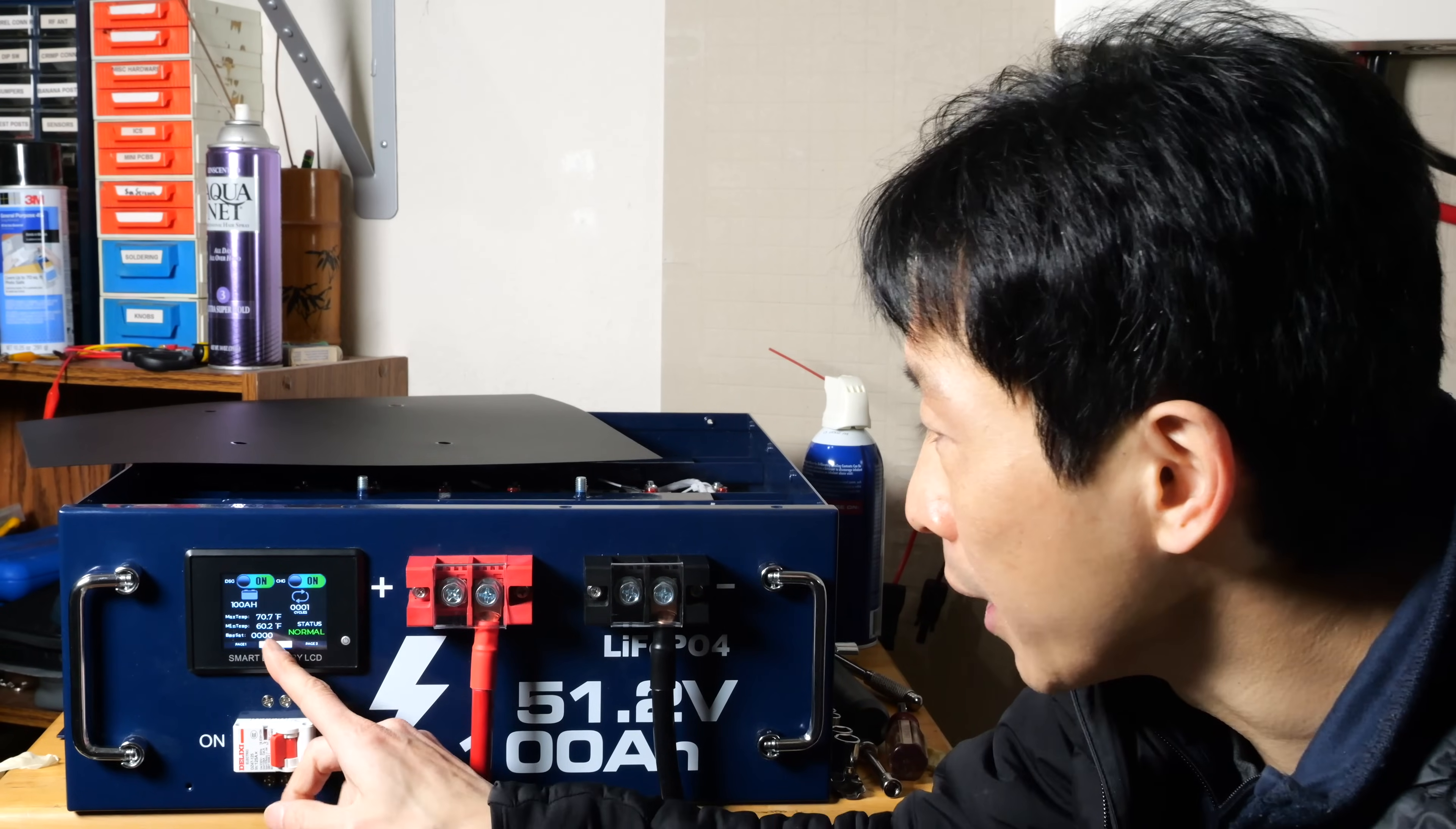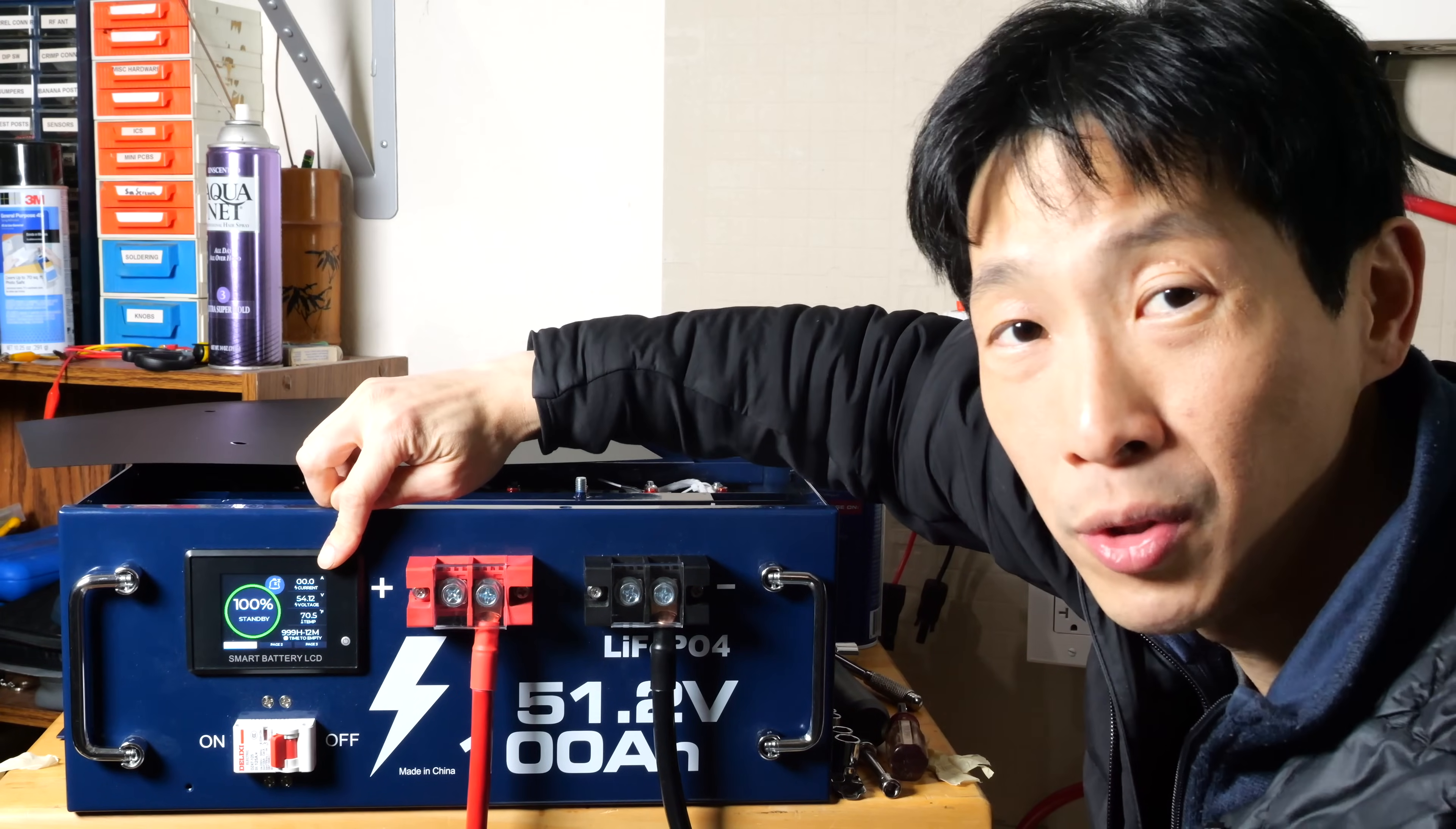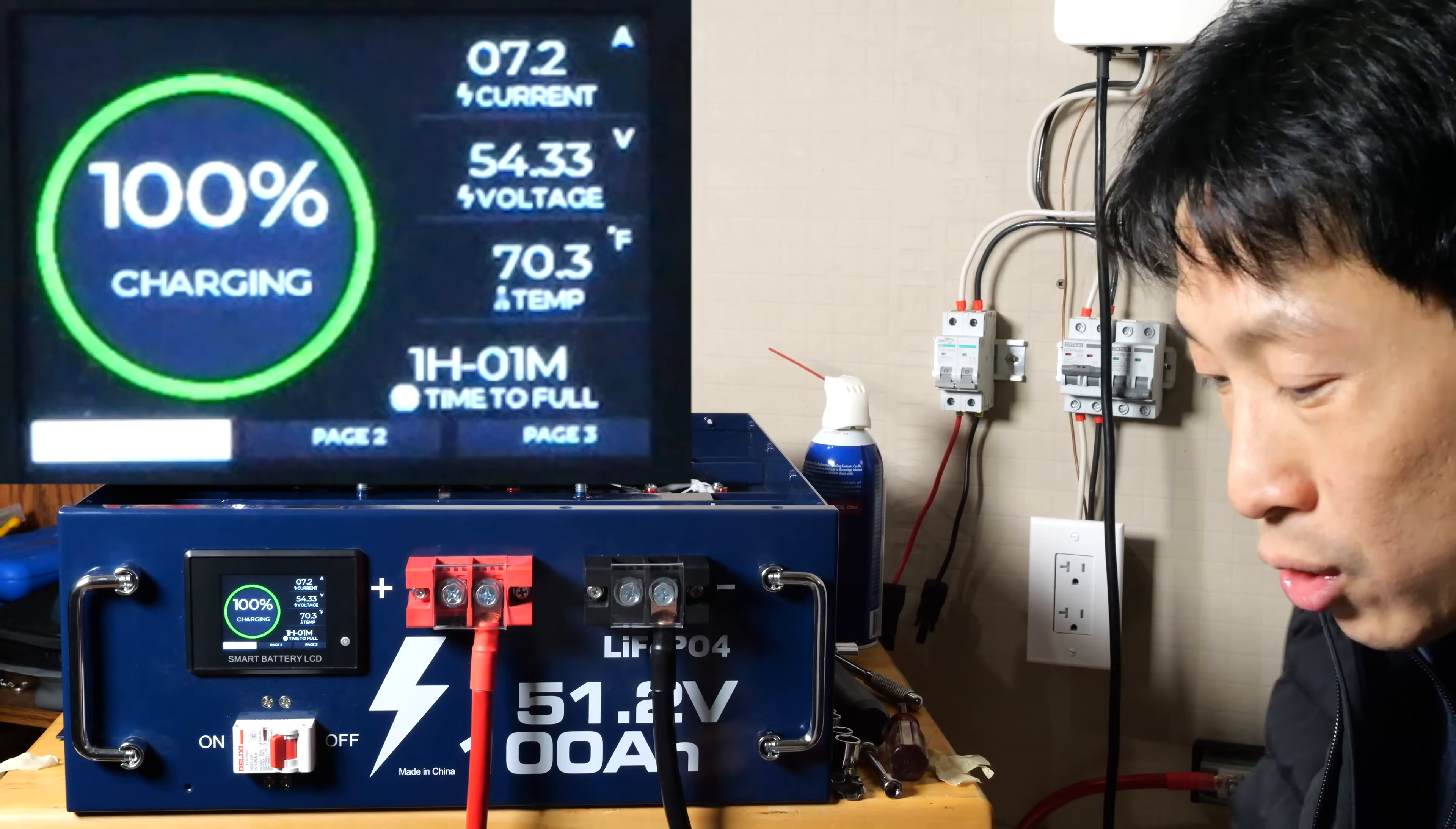Remember that screen over here. We can turn off the charging if we don't want to charge it. Just push the button. 23 amps. It goes to zero amps. Maybe sometimes you don't want to charge the battery. And you have the same thing for discharging. You can turn on and off this charging if you want. So now it goes back to charging again.